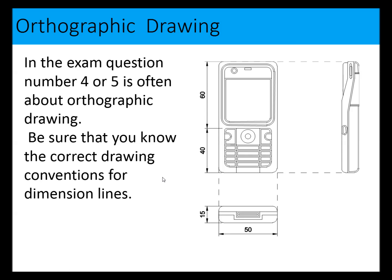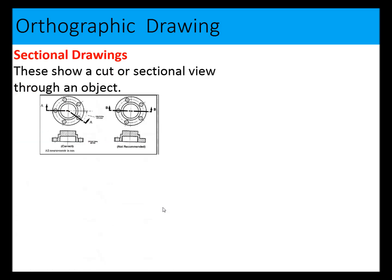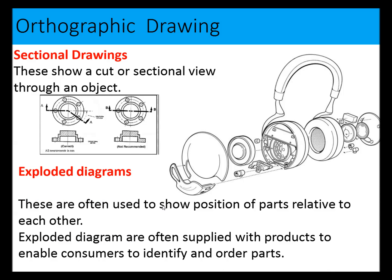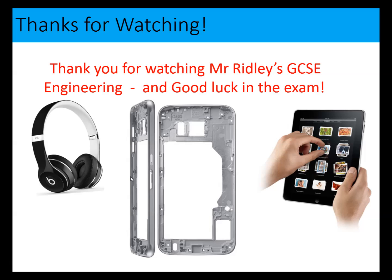In past exam papers, question four or five has often been about orthographic drawing. You need to know the correct drawing conventions - for example, dimension lines, arrows, position of dimensioning, and dimensioning lines. You should also be aware of sectional drawings and know how to draw and read them. Exploded diagrams are used to show the position of parts relative to each other and are often supplied with products to enable consumers to identify and order parts. Good luck in the exam.